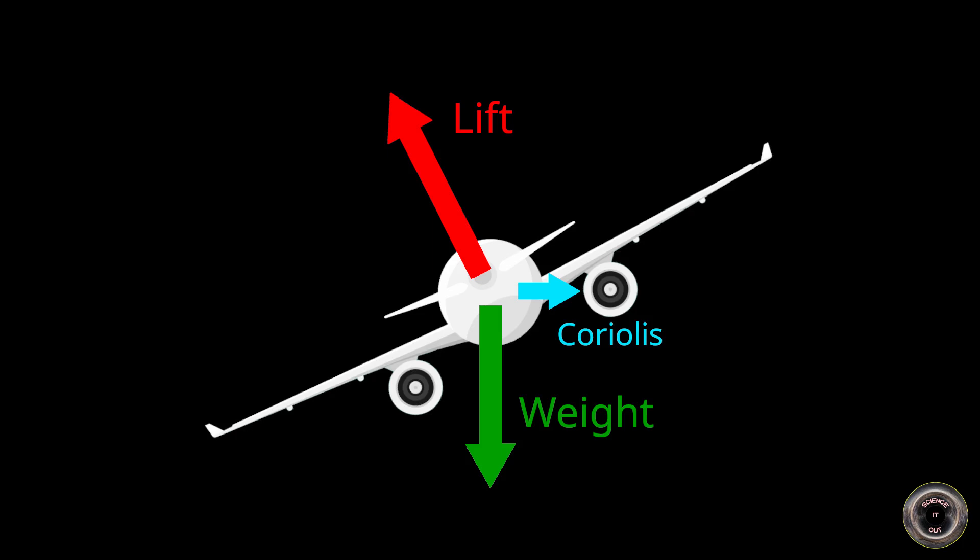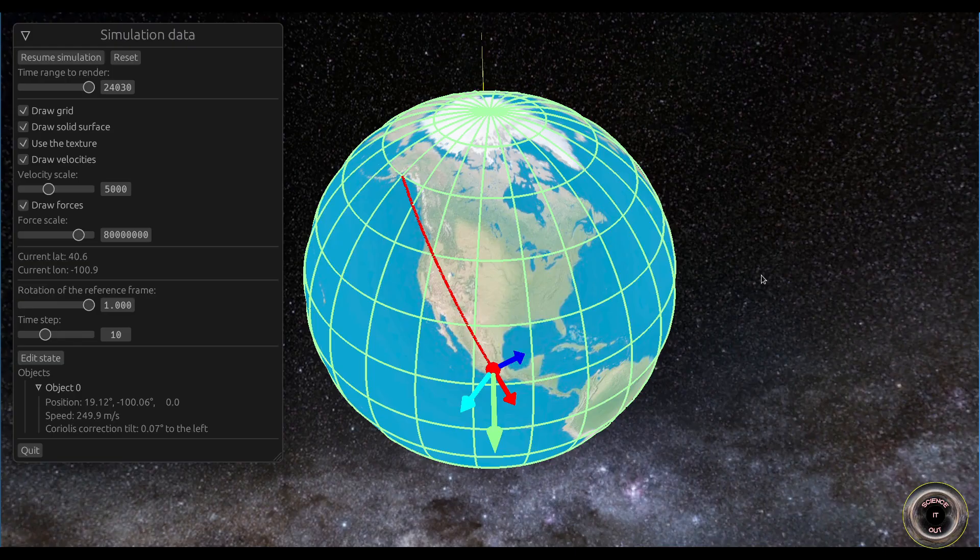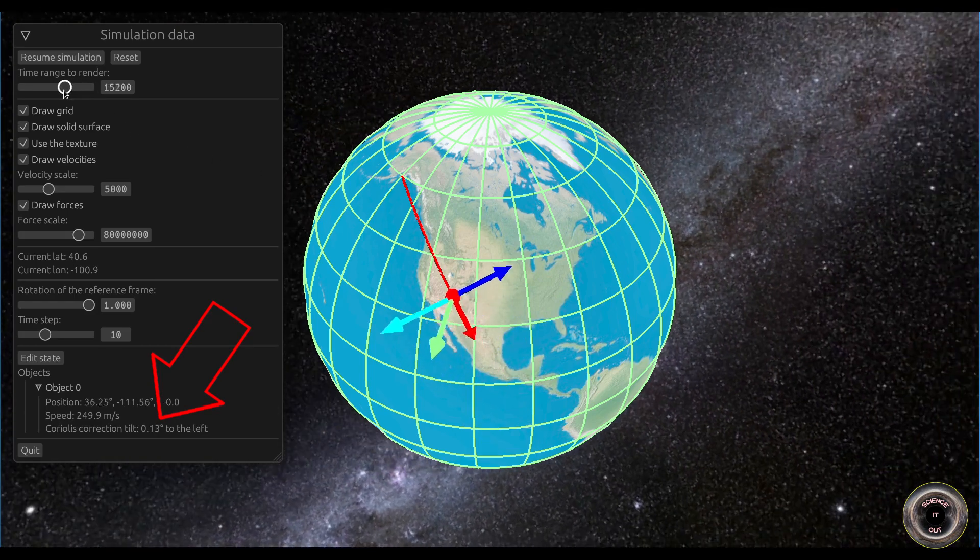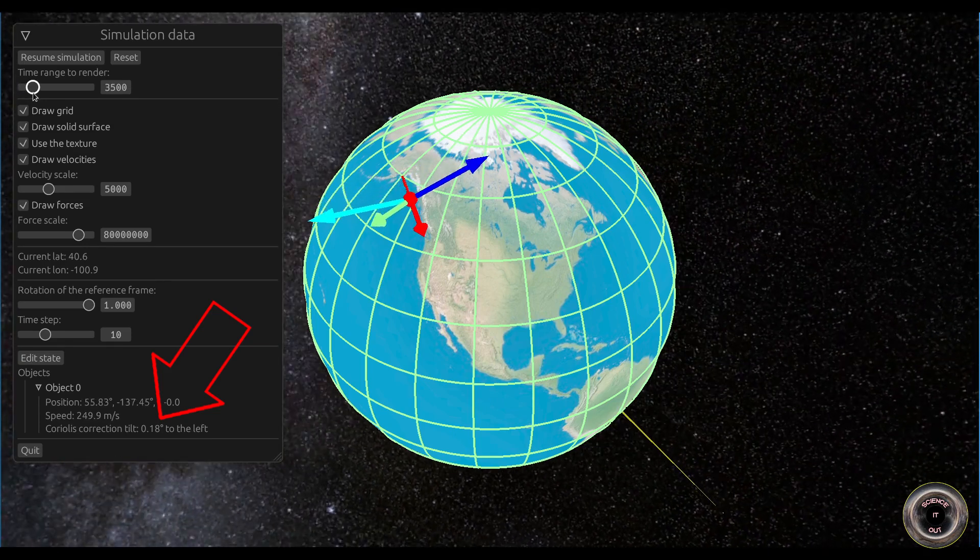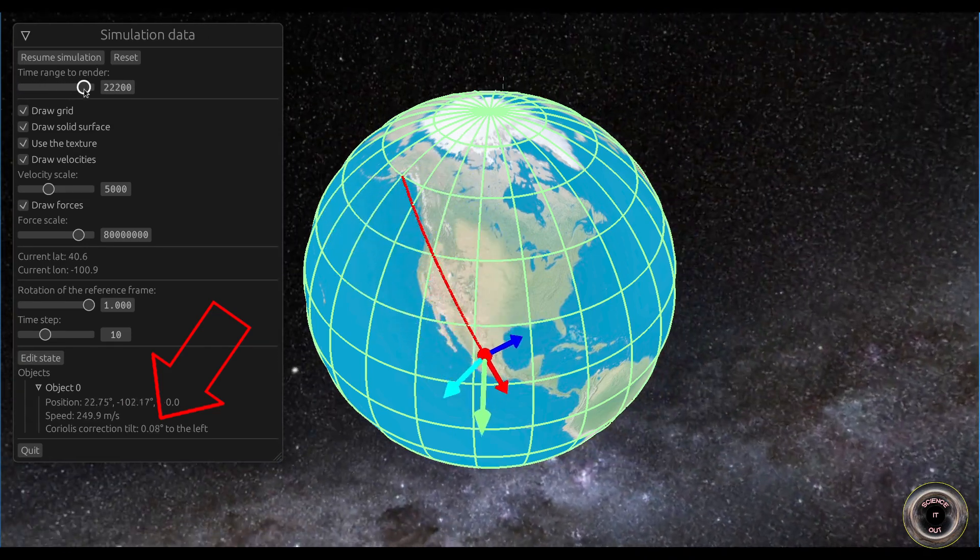If you have flown on a plane you may be confused at this point. Wait, you might say, I've never noticed a plane tilting to the side. Does it mean there was no correction for Coriolis? The answer lies in how big this correction is. How much does the plane have to tilt to apply the necessary correction? Well, the simulator can show this value to us. It is between 0.18 and 0.07 degrees. It is simply small enough not to be noticeable.